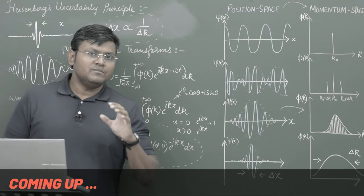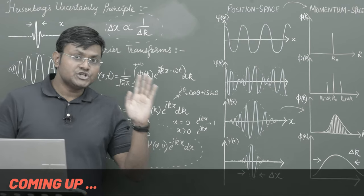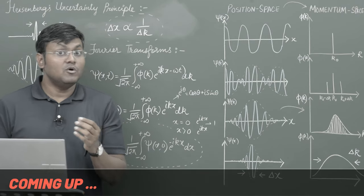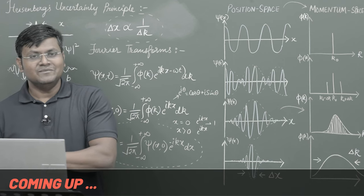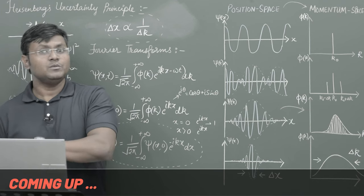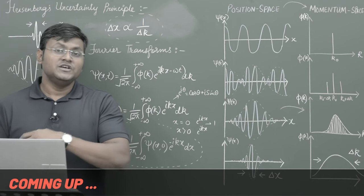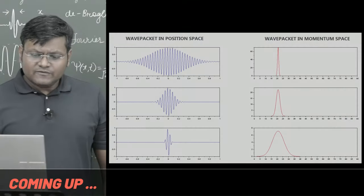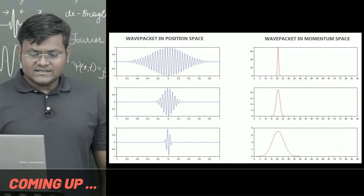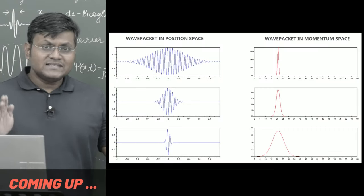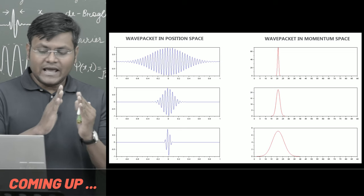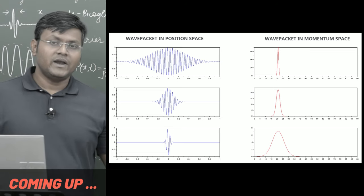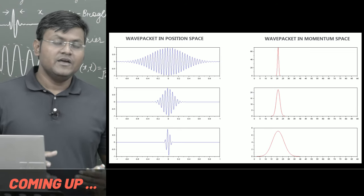The more accurately we can measure the position of a particle, the less accurately we can measure the momentum of the particle. And the more accurately we can measure the momentum of the particle, the less accurately we can measure the position of the particle. I've gone a little bit further in the third case scenario where the wave packet is even more localized, and the Fourier transform leads to a much wider spread in the k values.